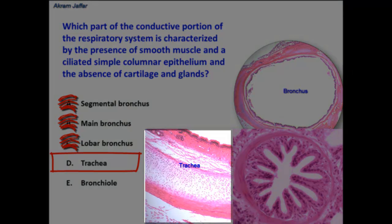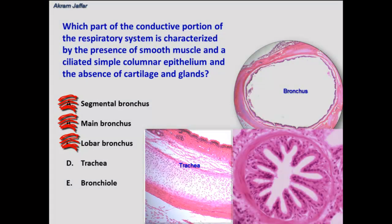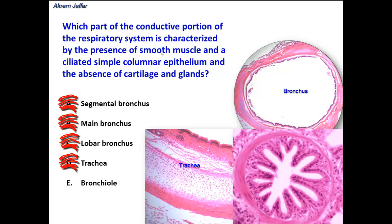Trachea — this is a section in the trachea. Again, here we have the lining: a pseudostratified columnar ciliated epithelium. There are glands in the submucosa, and there is cartilage in the form of a C-shaped cartilage plate. So it does not fulfill the criteria. Smooth muscle in the trachea does not form a continuous layer; the smooth muscle fibers are located at the posterior end of the C-shaped cartilage, connected by trachealis muscle fibers. However, the trachea contains cartilage, it has glands, and the epithelium is pseudostratified columnar, not simple columnar.